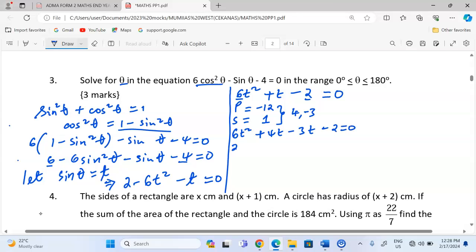So now we will factor out 2t, then we remain with 3t + 2. Then when we factor out here, we're going to have -1, so that will remain with 3t + 2 = 0.